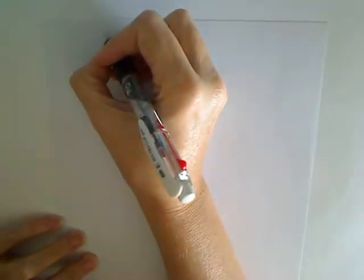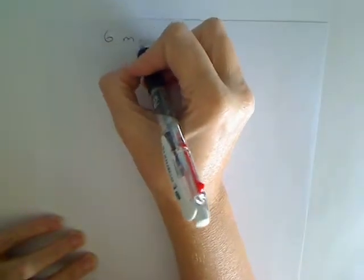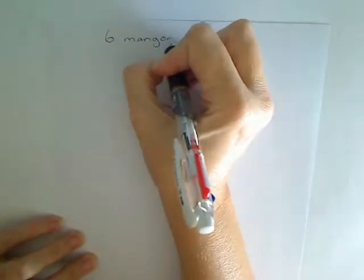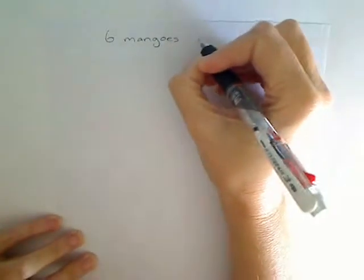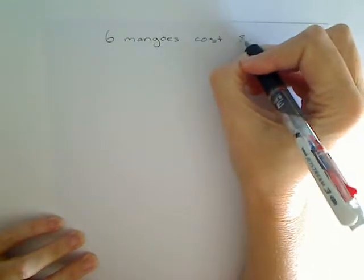Let's have a look at the unitary method. It's a fantastic method — you can use it in so many places. We're looking at the mango problem: we have 6 mangoes and they cost $12.